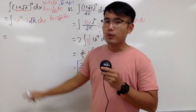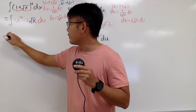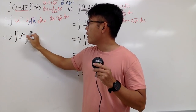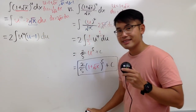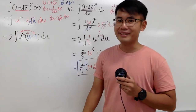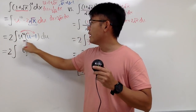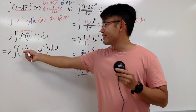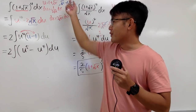Now we have u to the fourth power times 2 times (u minus 1). Bringing the 2 to the front of the integral, we get 2 times the integral of u to the fourth power times (u minus 1) du. Distributing, this becomes 2 times the integral of (u to the fifth power minus u to the fourth power) du. Everything so far is prep work — the actual integration step comes next.